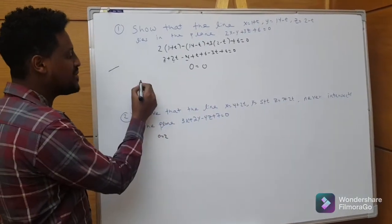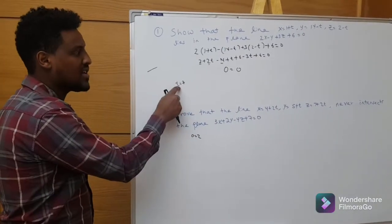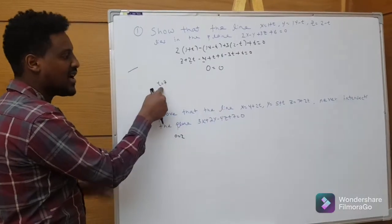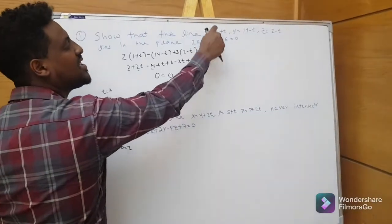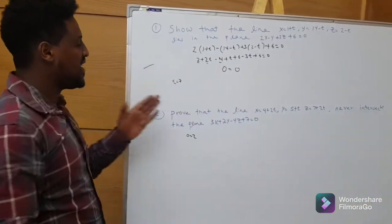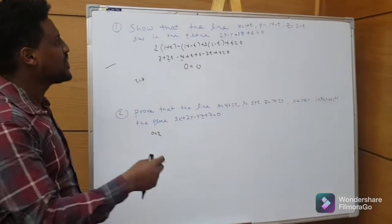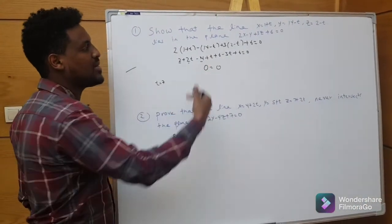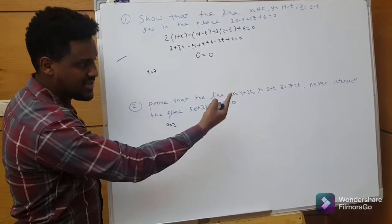If the result equals 7, it intersects. From the previous video, if the plane equation gives 0 is equal to 0, it lies on the plane and will never intersect — not even at 2 points.